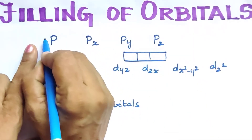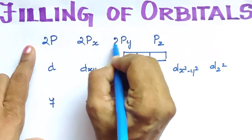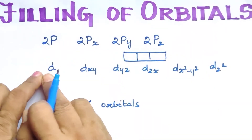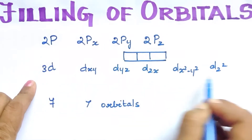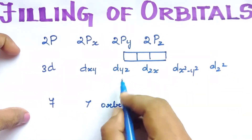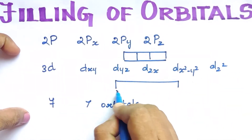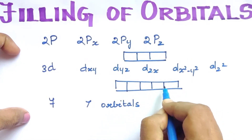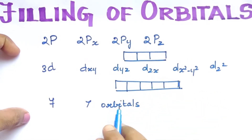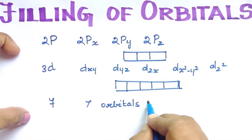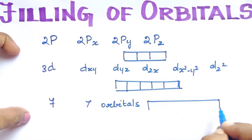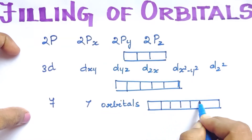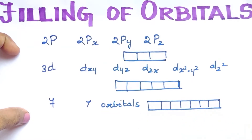For example, 2P has three orbitals: 2Px, 2Py, and 2Pz — so 3 boxes. For D orbitals, it is 5 orbitals, so we draw 5 boxes: 1, 2, 3, 4, 5. For F orbitals, there are 7 orbitals, so we draw 7 boxes: 1, 2, 3, 4, 5, 6, 7.